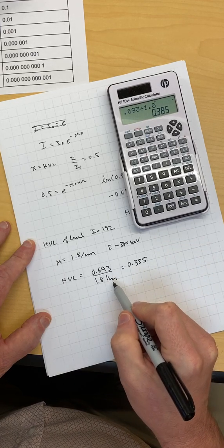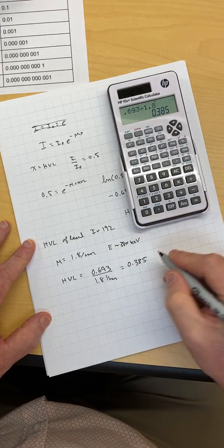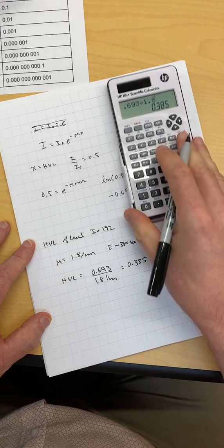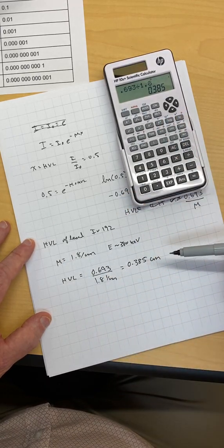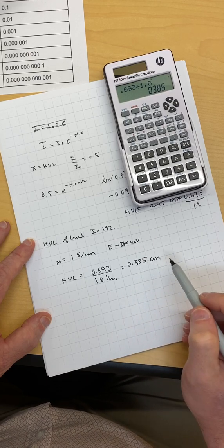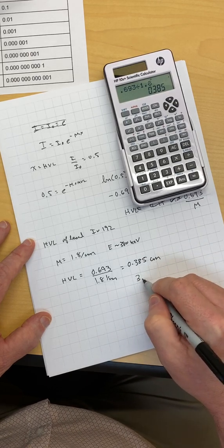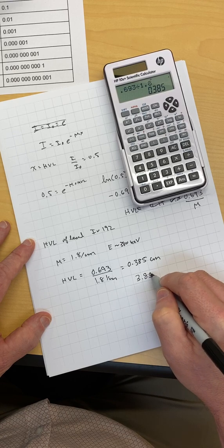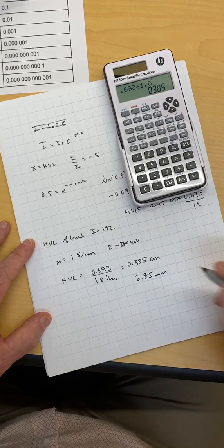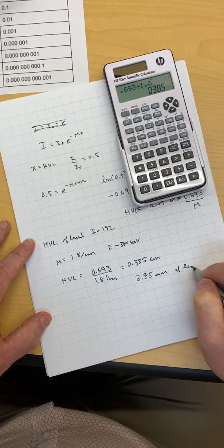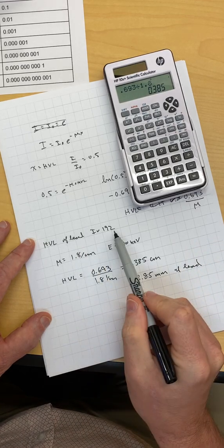This is 1 over centimeters on the bottom, so when it comes back up on the top, it goes to centimeters. So if I want to attenuate some iridium-192 by half, I need to put 0.385 centimeters of lead in there. It's probably easier to think of it this way, 3.85 millimeters of lead to attenuate an iridium-192 source.